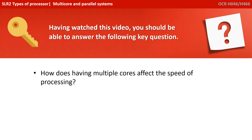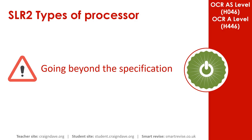Having watched this video, you should be able to answer the following key question: how does having multiple cores affect the speed of processing? That's where the specification ends, but if you want to know a little bit more, watch the rest of this video where we go into a little bit more depth.